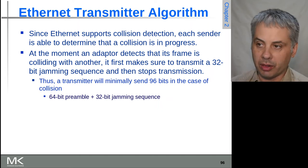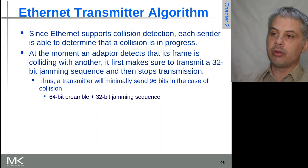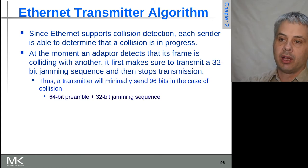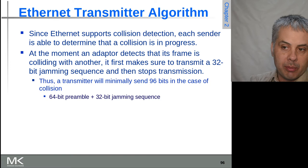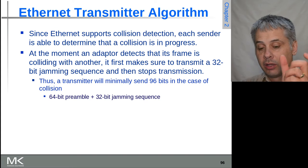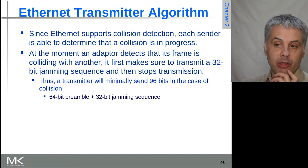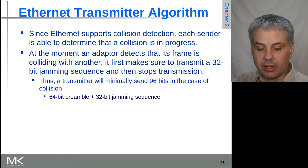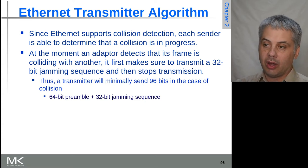Because Ethernet does have collision detection, we can tell that it's happening. As soon as the adapter realizes that its frame is colliding with another one, it first sends a 32-bit jamming sequence to make sure that the other transmitter will also realize that, and other devices as well. So at the very least it will send the 64-bit preamble followed by the 32-bit jamming sequence. So 96 bits of data will be sent in the case of a collision being detected on Ethernet, but possibly more if the two transmitters are not perfectly synchronized. If it's a longer Ethernet, that may not be realized for a little while later, but it's going to be at least 96 bits of time on the line occupied.